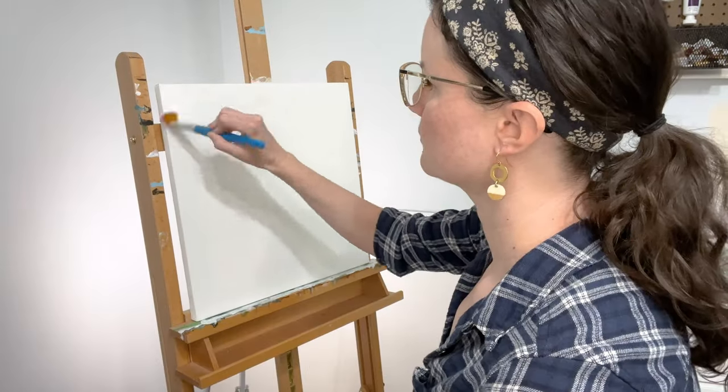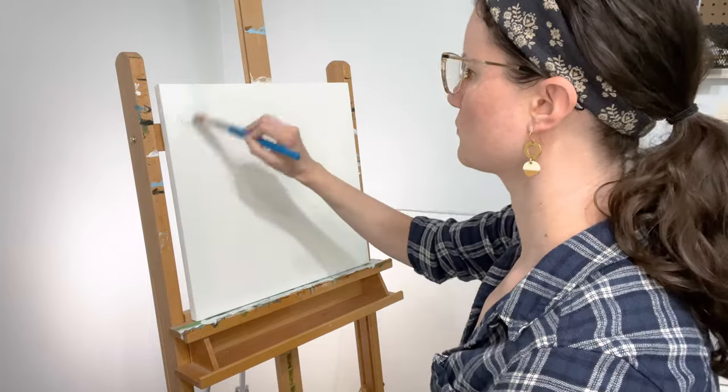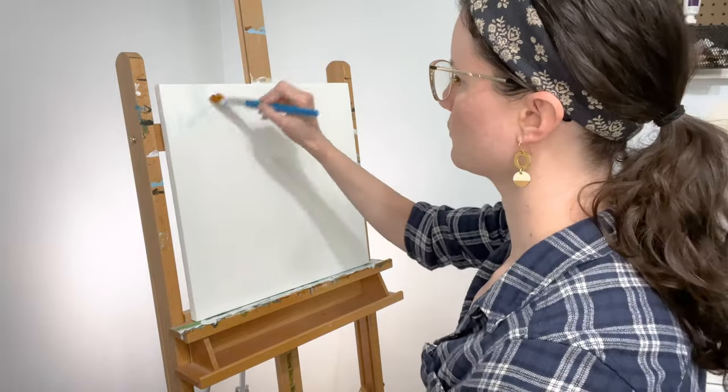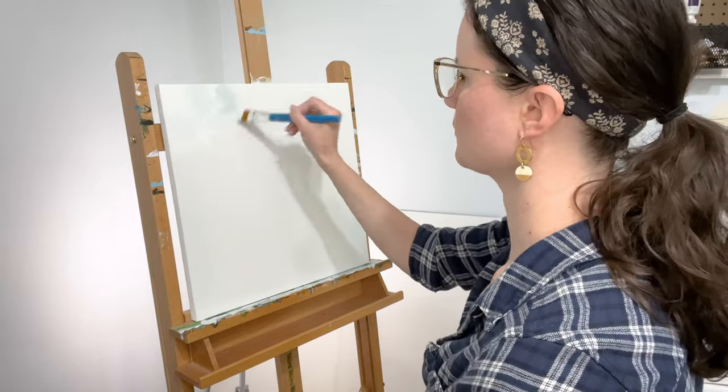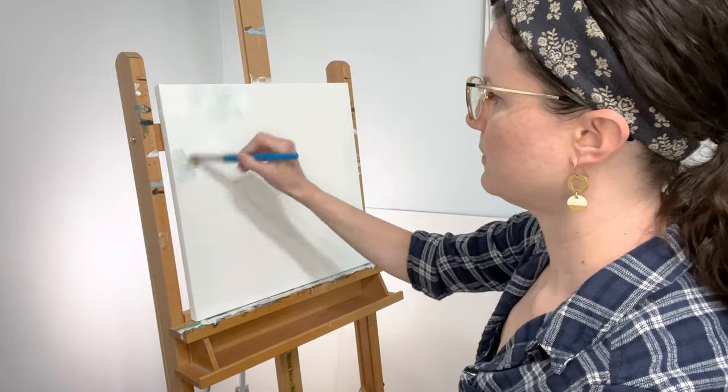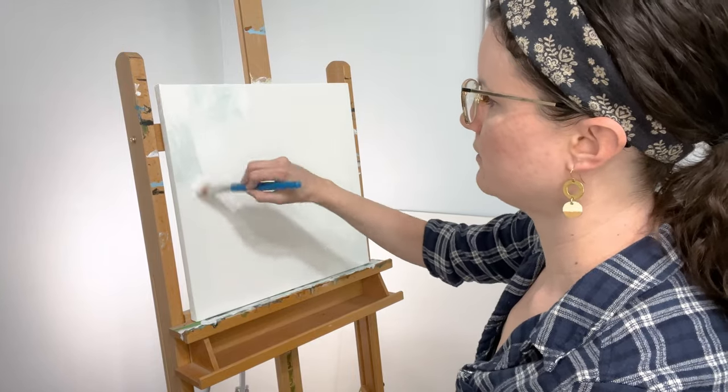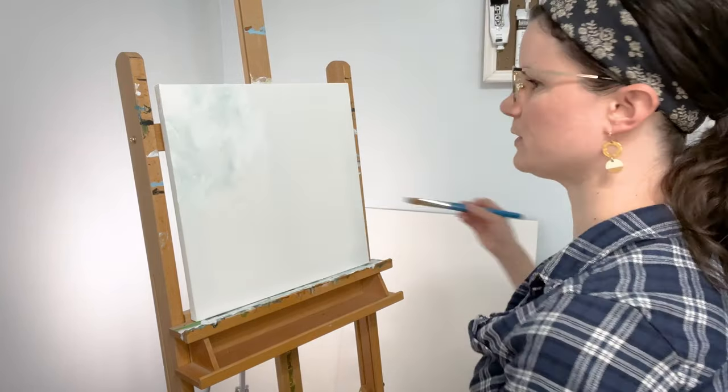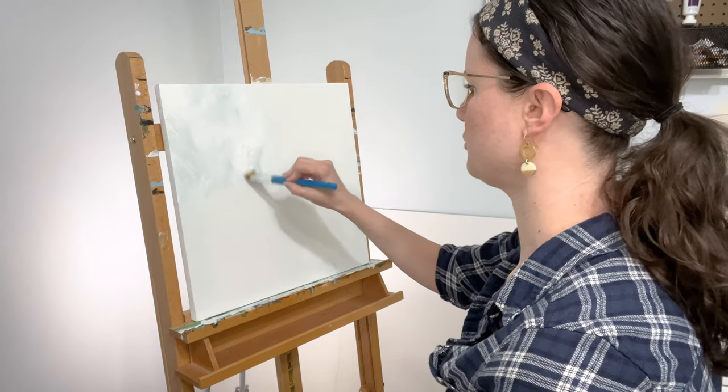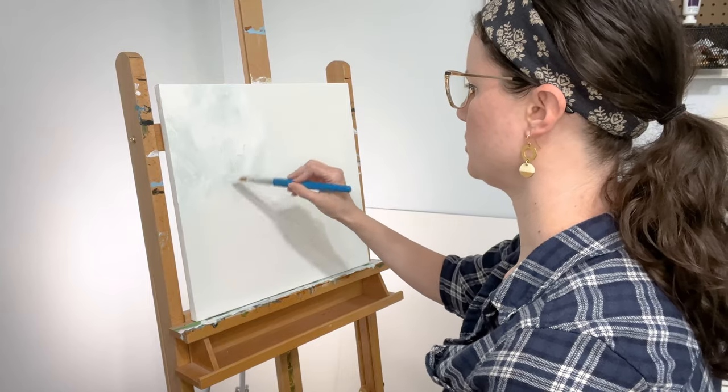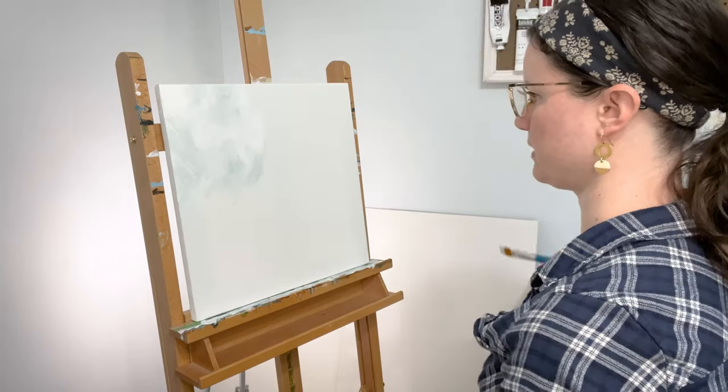So first things first, we need to do the background which is a lot of white paint. I do add a little bit of color or just gray sometimes for some texture. So I'm just going back and forth between a white and a muted green-gray color. There's really no rhyme or reason to these brushstrokes. I'm just leaving the brushstrokes visible so I'm not completely smoothing everything out.